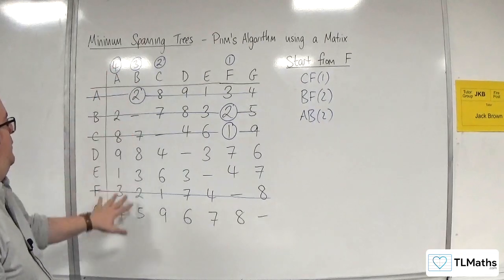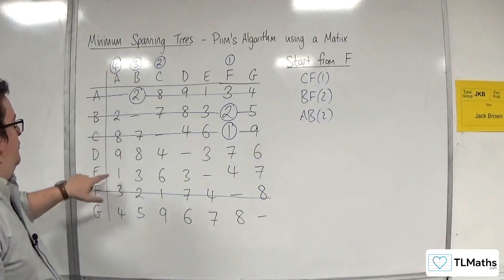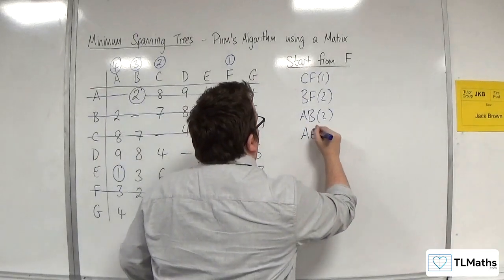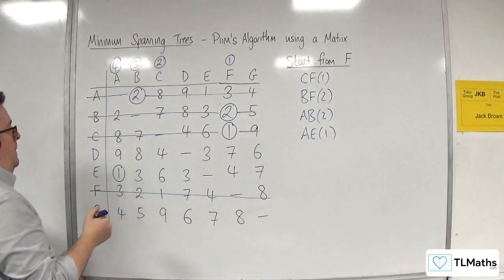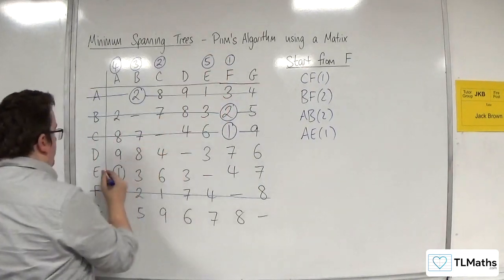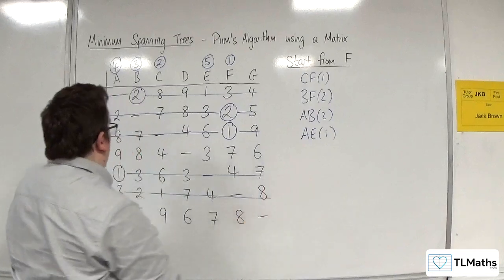Now I'm looking down A, B, C, and F. I've spotted this 1. That'll be the next one. A, E with 1. E is now connected. That gets the number 5. Delete the rest of the row.